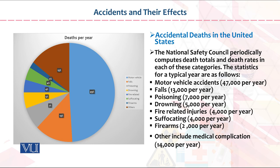This slide presents a pictorial representation of accidental deaths — 49% from motor vehicles. Motor vehicle accidents account for 47,000 deaths per year, falls for 13,000 per year, and poisoning for 7,000 per year. These figures are given in an easily understandable form for students.